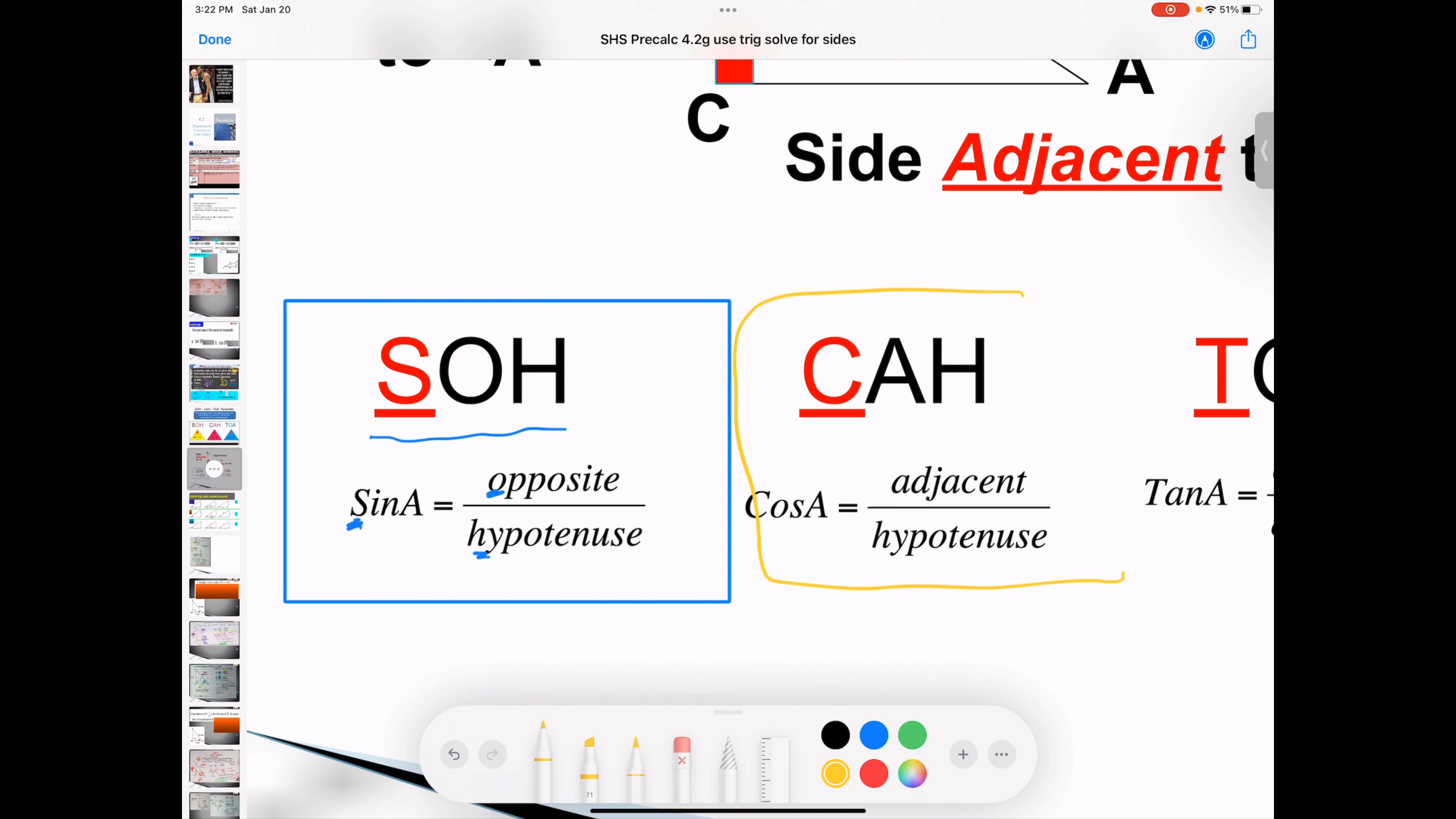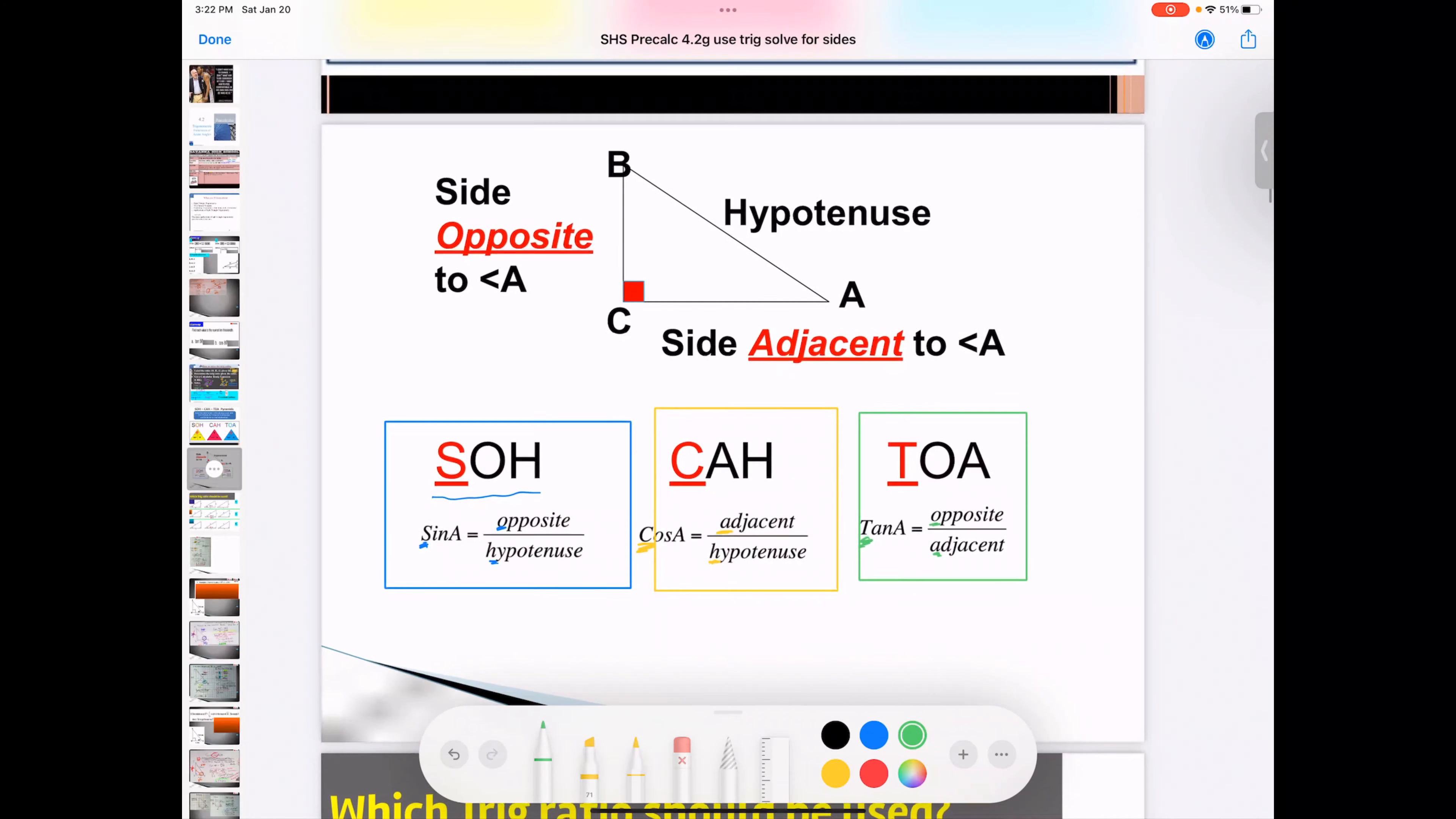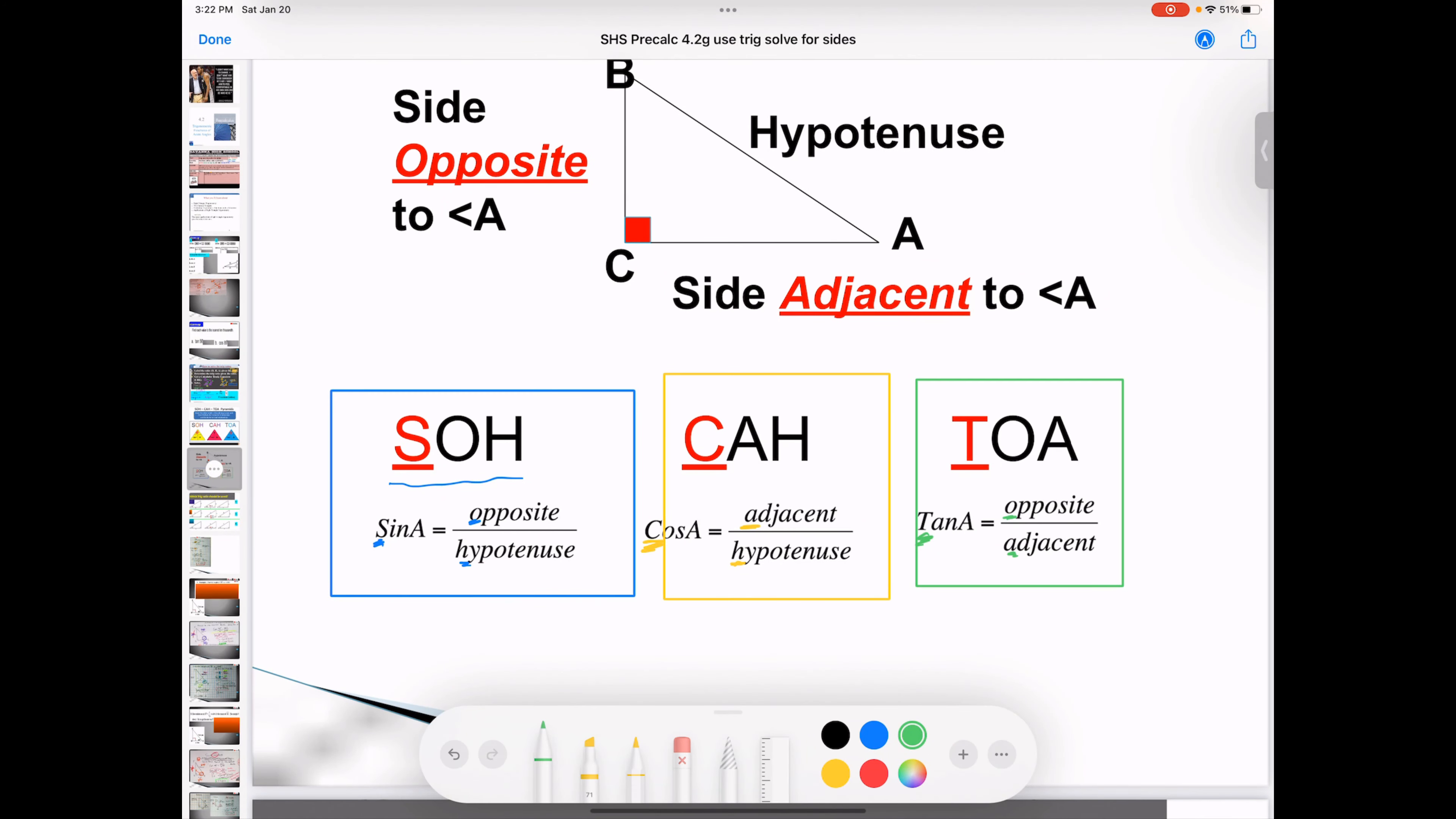Then CAH represents cosine equals adjacent over the hypotenuse. And then the tangent is TOA. The tangent is equal to the opposite over the adjacent. So that silly phrase can help you remember from a given information.